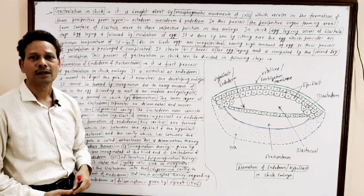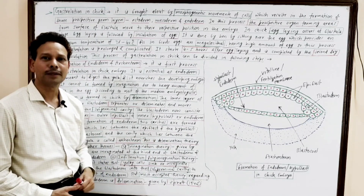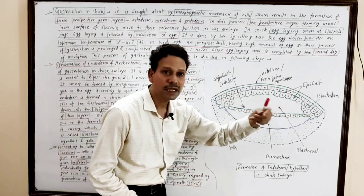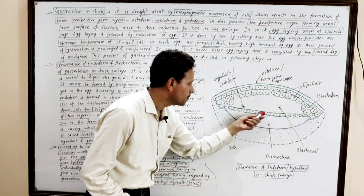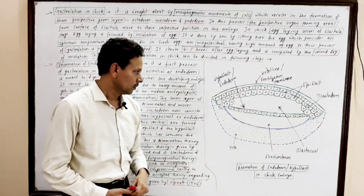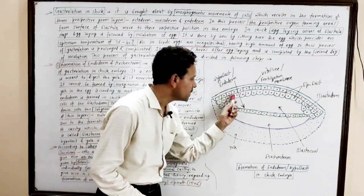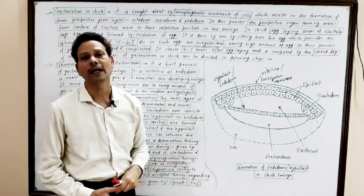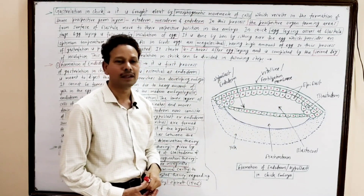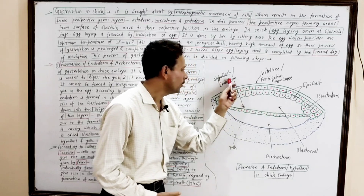There are some other theories regarding the formation of endoderm. The invagination theory, given by Jacobson, states that the hind part of the blastoderm undergoes invagination, and the invaginated cells produce a sheet of endoderm or hypoblast. The next theory is the infiltration or polyinvagination theory, given by Peter. According to this theory, heavy yolk-containing cells sink individually into the sub-germinal cavity and produce a sheet, resulting in endoderm or hypoblast development.